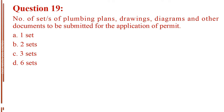Question number 19. Number of sets of plumbing plans, drawings, diagrams, and other documents to be submitted for the application of permit. Letter A, one set. Letter B, two sets. Letter C, three sets. Letter D, six sets.